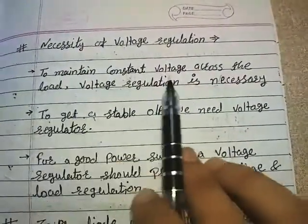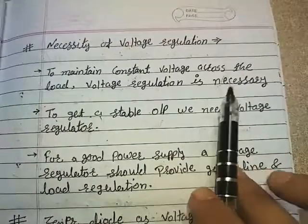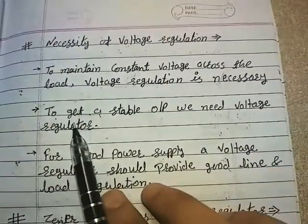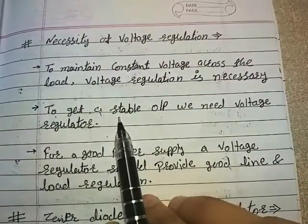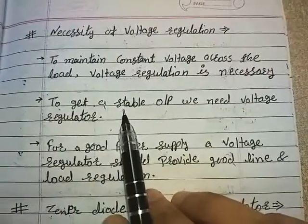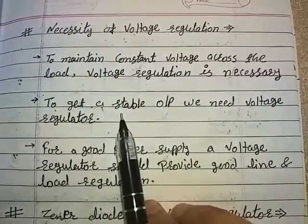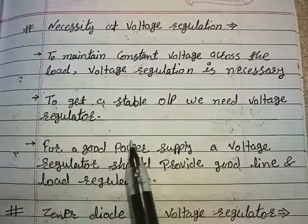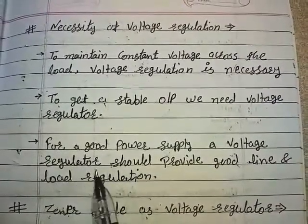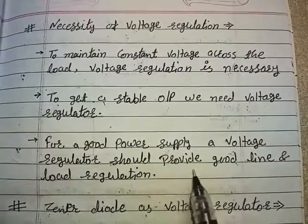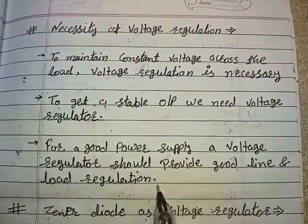To maintain a constant voltage across the load, voltage regulation is necessary. To get a stable output we need a voltage regulator, and hence we are using a voltage regulator at the last stage of the power supply so that the output of the filter will be stabilized.